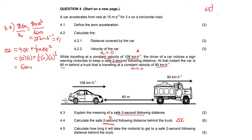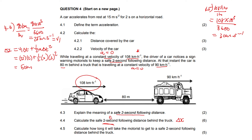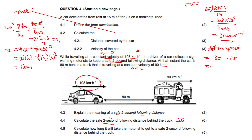4.5: Calculate how long it will take the motorist to reach a safe two-second following distance behind the truck. First, convert the car's speed of 108 kilometers per hour: 108 times 10 to the power of 3 divided by 3,600 gives 30 meters per second. The difference in speed between the car (30 m/s) and the truck (25 m/s) is 5 meters per second.